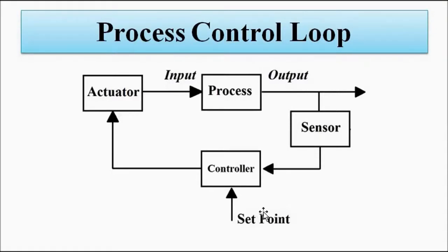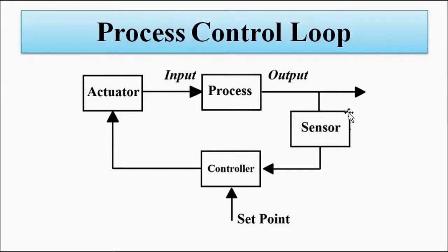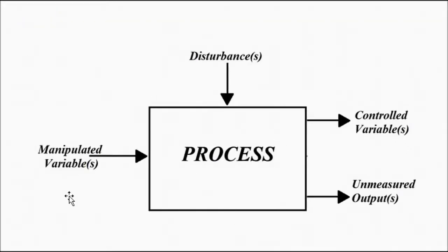The basic aim of the process control loop is to bring the output close to the desired value, close to the set point value. It may never be exactly equal to the set point value, but the job of the process control loop is to minimize the gap between the actual output and the desired output — to minimize the gap between expectation and reality.